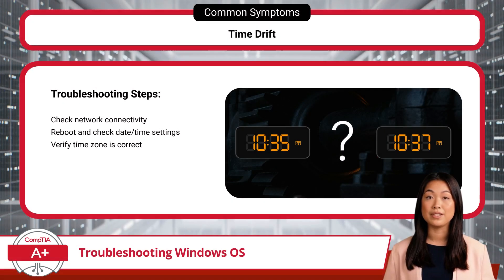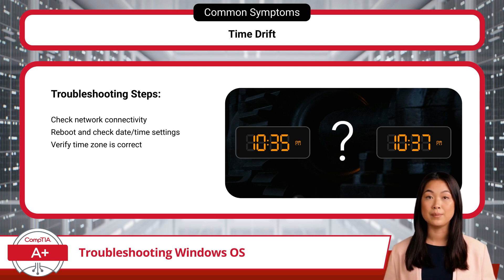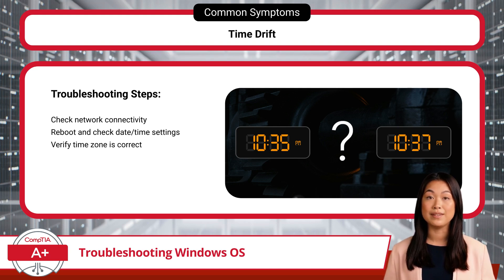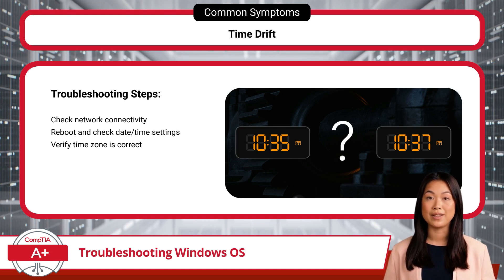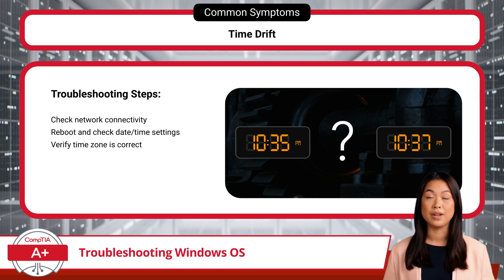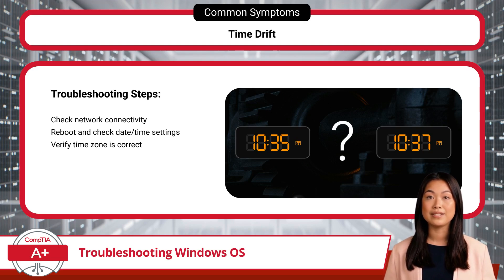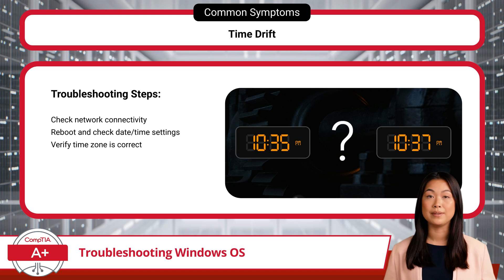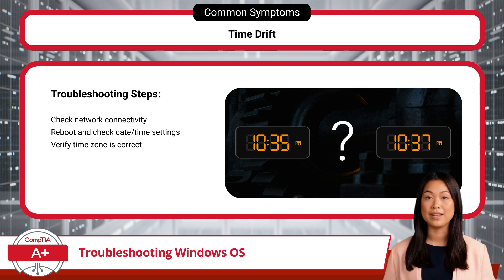Finally, let's address time drift, which occurs when the system clock falls out of sync with the real time. While this may sound trivial, it can lead to a variety of issues. The system clock plays a critical role in maintaining the accuracy and integrity of time-dependent processes, such as verifying website certificates, coordinating with authentication servers, and synchronizing with other systems. When time drift happens, it can cause problems like invalid certificates, failed authentication attempts, and errors when connecting to network resources. The most common causes include network connectivity issues, misconfigured time settings, or interrupted synchronization with a time server. To begin troubleshooting, reboot the system and check that the date and time settings are correct, paying special attention to the time zone. Persistent time drift may require restoring the system to a previous point or repairing Windows to address deeper system file issues that impact timekeeping.